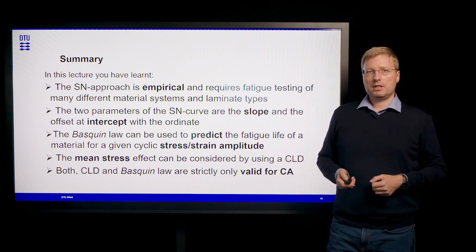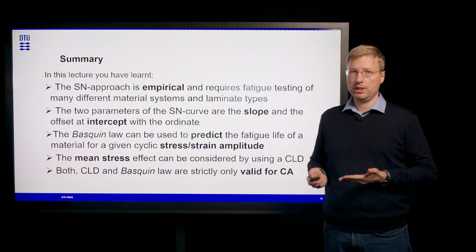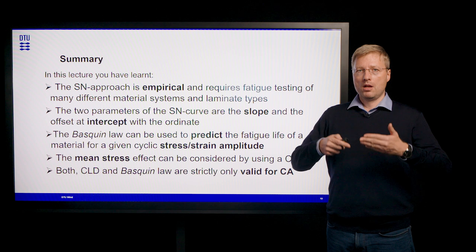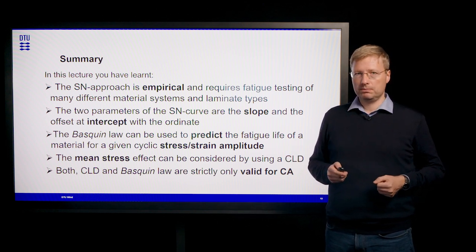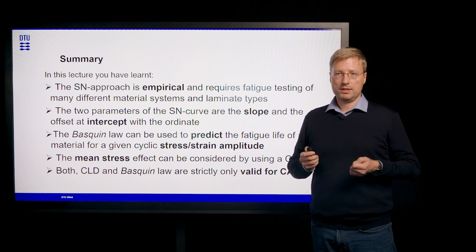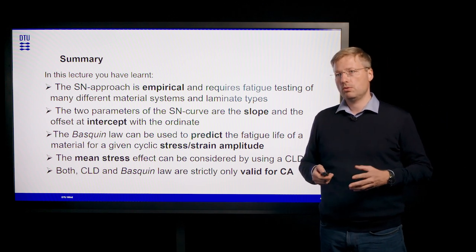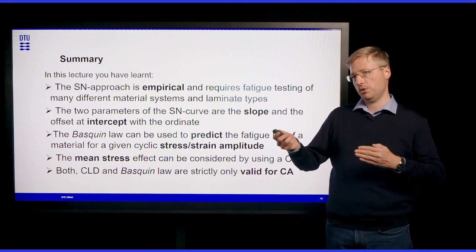As a summary: the SN approach is a purely empirical method requiring a lot of fatigue testing of many different material systems and laminate types at various amplitudes and means. The two parameters obtained from these testing campaigns are the slope — or inverse slope — in the SN diagram and the intercept constant C. The Basquin law can be used to predict fatigue life for a given cyclic stress or strain amplitude. The mean stress effect can be considered using a constant life diagram. Importantly, both the CLD and the Basquin law are strictly valid only for constant amplitude loading conditions; for variable amplitude situations, a different approach is needed.